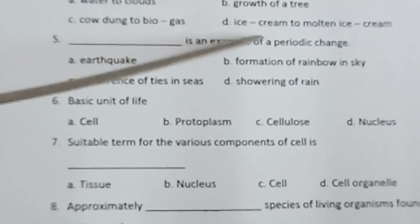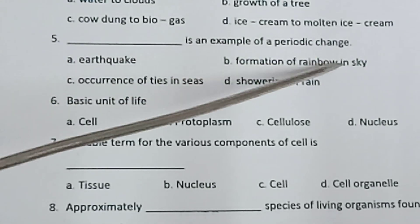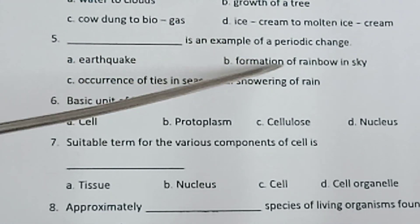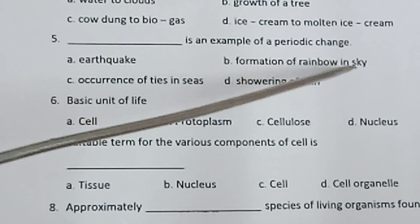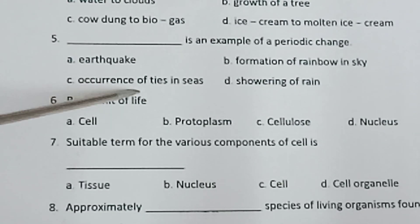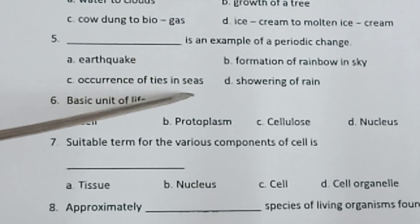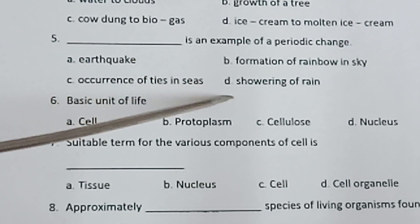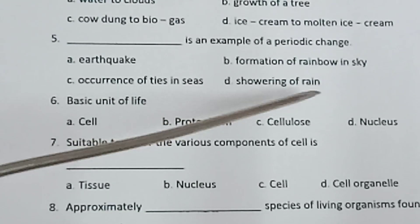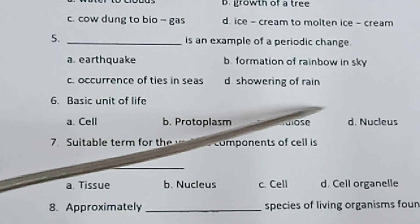Fifth one: Which of the following is an example of a periodic change? — Earthquake, Formation of rainbow in sky, Occurrence of tides in seas, Showering of rain.